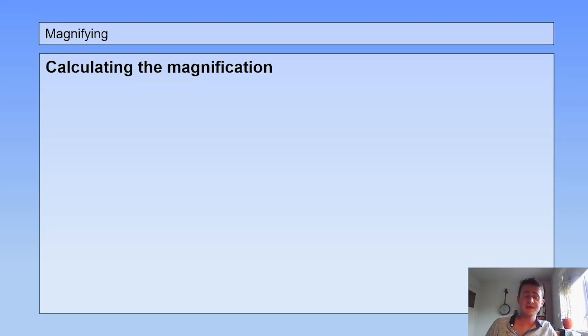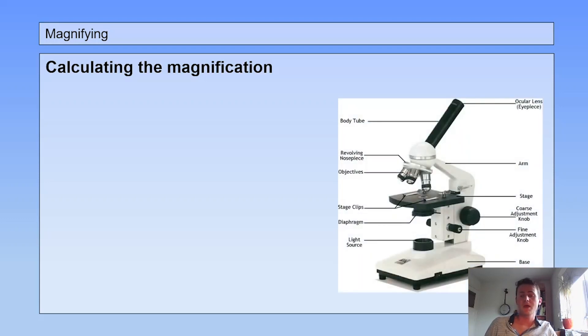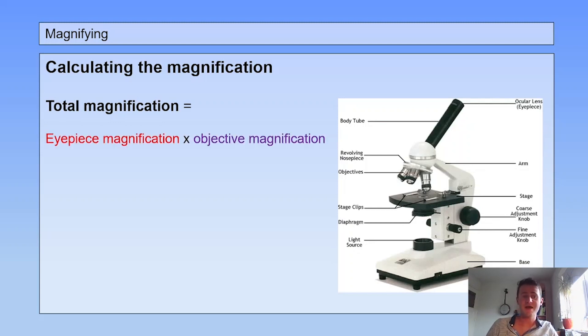Calculating the magnification. The total magnification of your microscope is the eyepiece magnification times the objective magnification. As I told earlier, in the objectives there are different kinds of tiny magnifying glasses, but in the ocular lens there's also a little tiny magnifying glass.